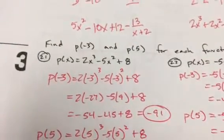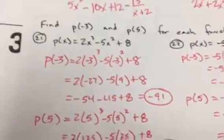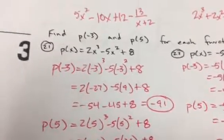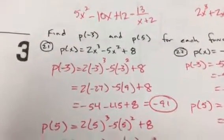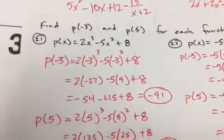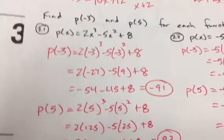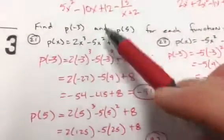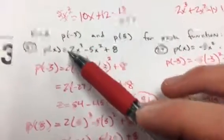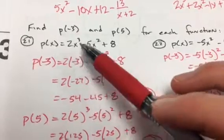Welcome to 90.9 the Quadratic for your third Algebra 2 5.1 to 5.4 quiz review video, brought to you by Chinatown and Coffee Espresso here in Litchfield. For problem 21, p(x) is equal to 2x to the third minus 5x squared plus 8.